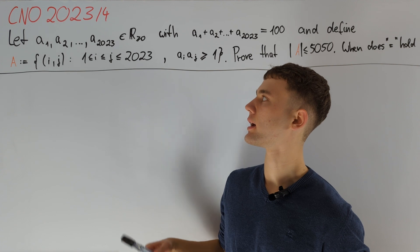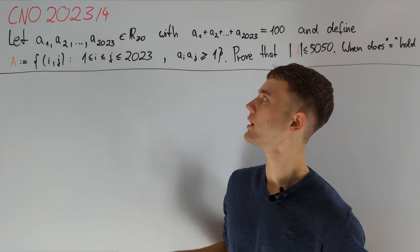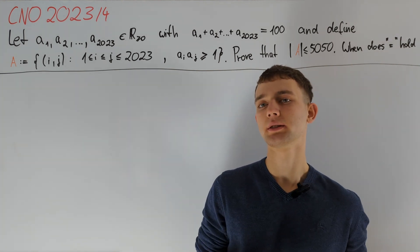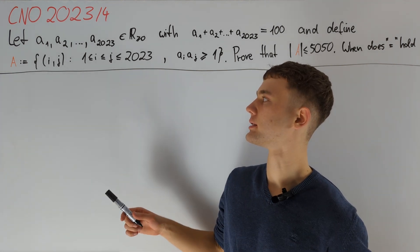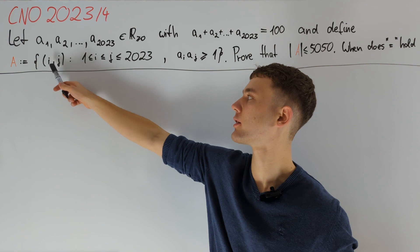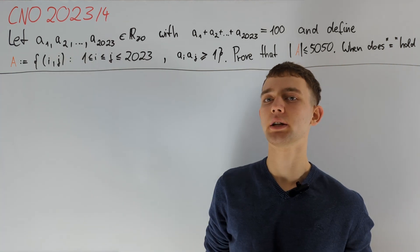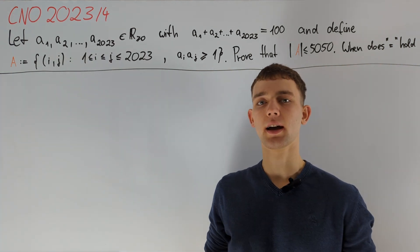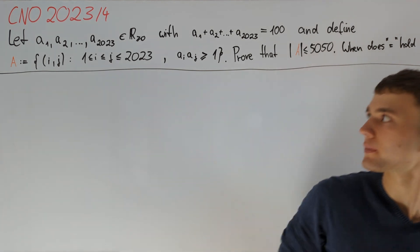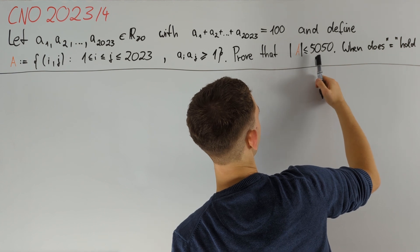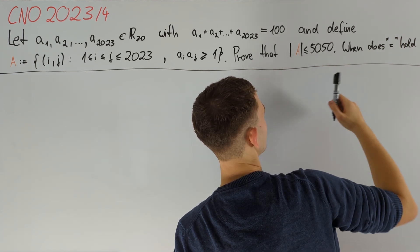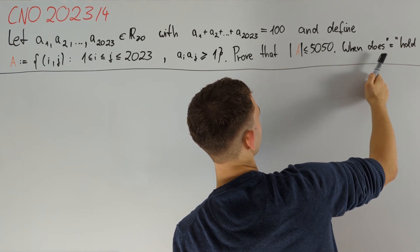We are given a1, a2 up to a2023 non-negative real numbers with sum equal to 100. Now we define A to be the set of index pairs i,j with i less than or equal to j such that a_i times a_j is greater than or equal to 1. We are asked to prove that the magnitude of A is at most 5050 and to answer when equality holds.